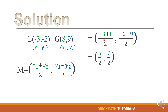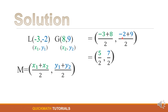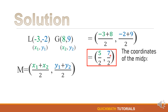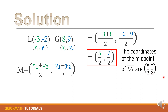For negative 3 and positive 8, we have different signs, so we will subtract: 8 minus 3 is equal to 5. For 9 and negative 2, since they have different signs, we will again subtract: 9 minus 2 is equal to 7. Therefore, the coordinates of the midpoint of the line segment LG are 5 over 2 and 7 over 2.